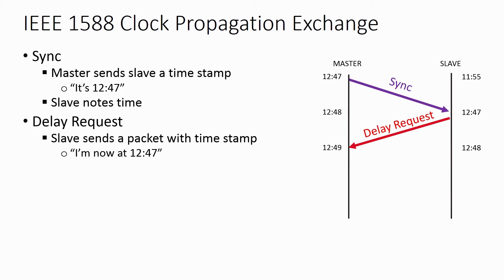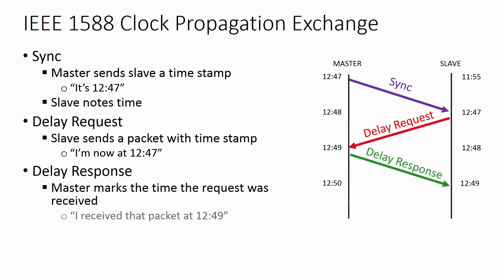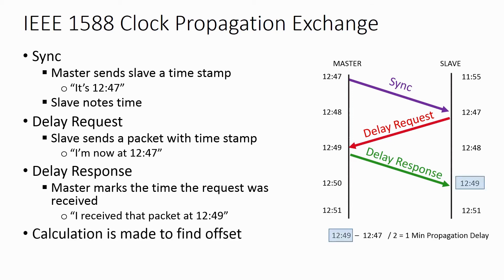The master receives this packet and responds back with the actual time that the packet was received — for example, it received the packet at 1249. The end device now knows it took one minute for the network traversal to happen, and it can account for this in its time offset. The end device and the grandmaster are now in sync.